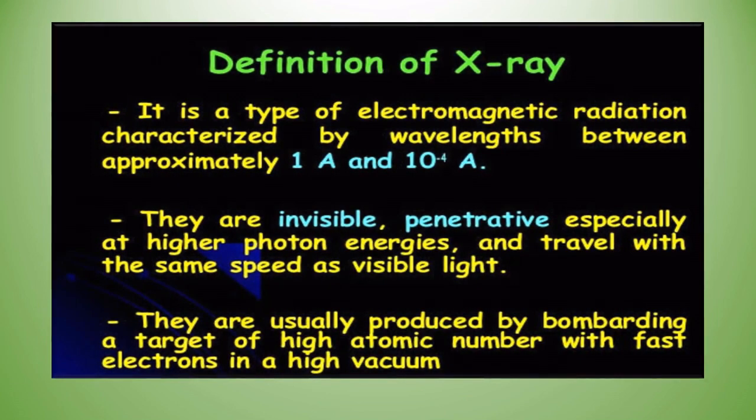Now let us see about X-rays. X-rays are a type of electromagnetic radiation characterized by wavelengths between approximately 1 and 10 Angstroms. They are invisible and penetrative, especially at higher photon energies, and travel at the same speed as visible light. X-rays are usually produced by bombarding a target of high atomic number with fast electrons in a high vacuum.